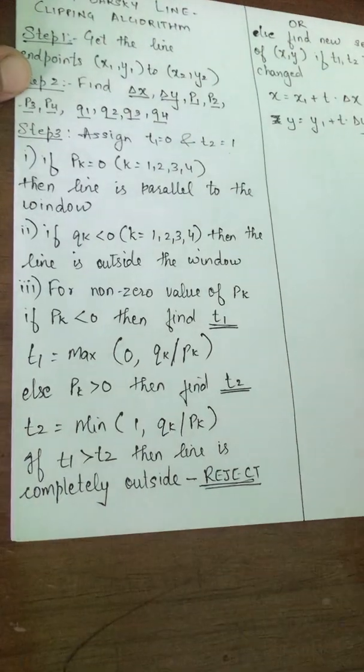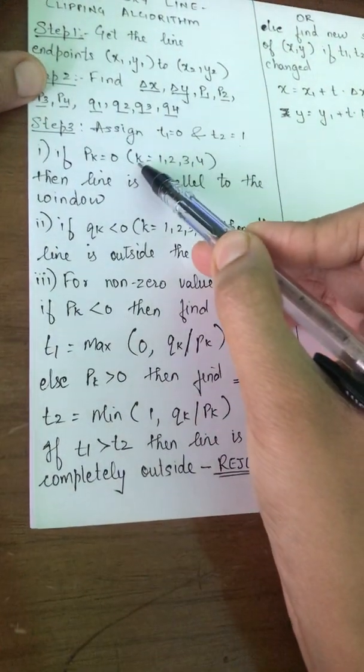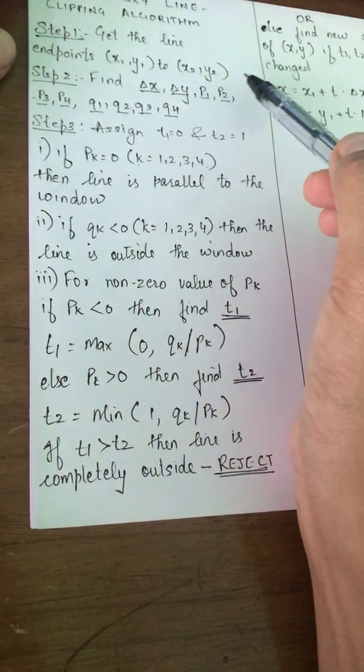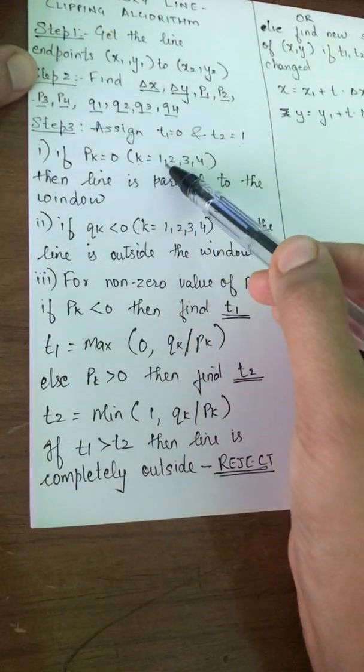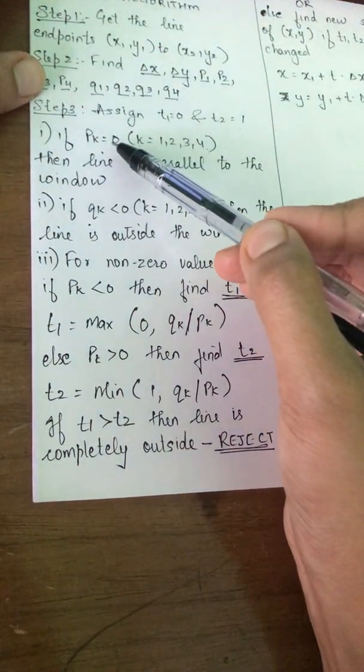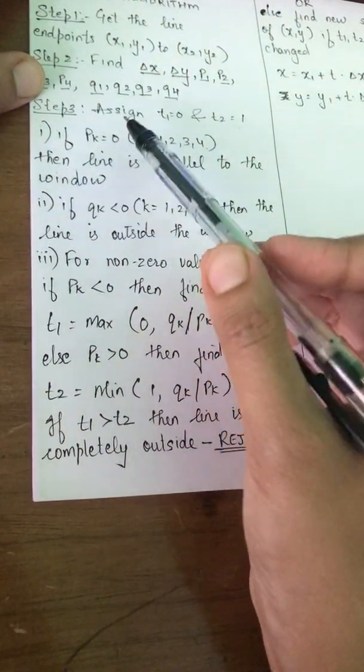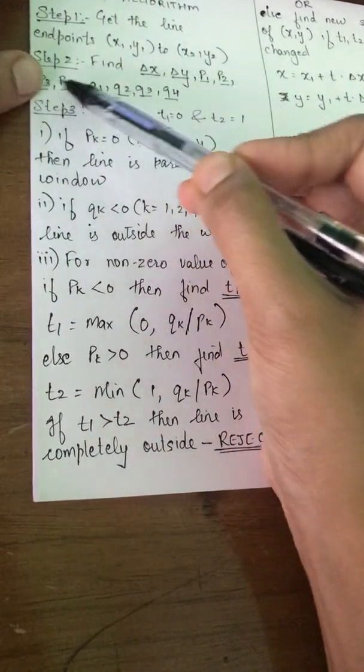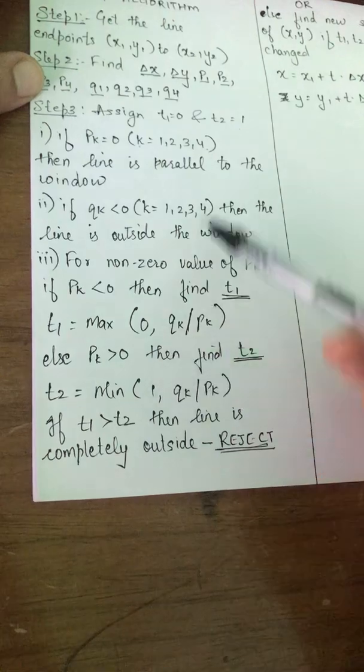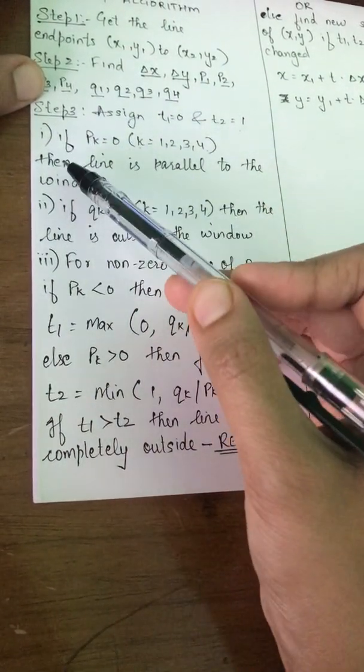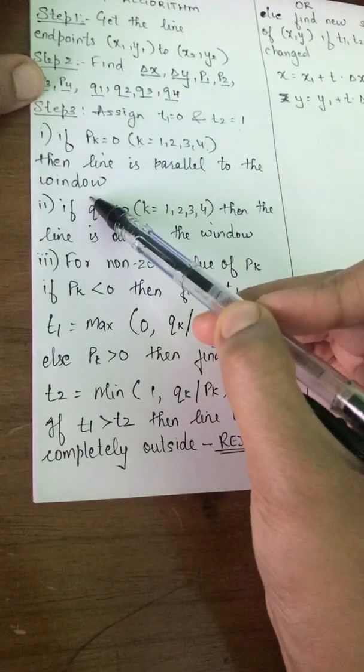Now, if pk where k equals 1, 2, 3, 4—so pk here is actually from p1 to p4 because k equals 1, 2, 3, 4—if that comes up to 0, when I am saying pk we are going to calculate p1, p2, p3, p4 all of them together. Any of these parameters, if they are equal to 0, then the line is parallel to the window.